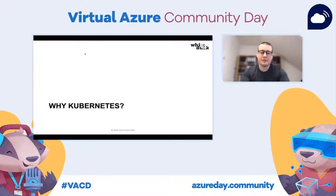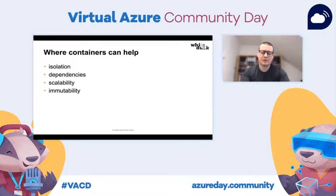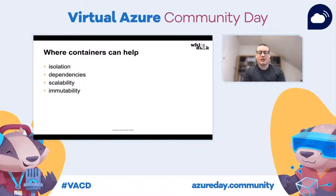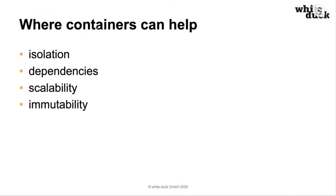Why do we need Kubernetes? Before we talk about Kubernetes, let's briefly talk about containers. With containers, we have some nice functionalities. First of all, we have isolation. A container is nothing more than an isolated process on our machine, which allows us to run multiple processes next to each other on a single machine without any trouble or dependency conflicts between the processes.